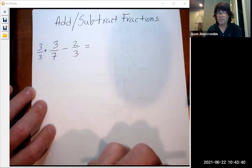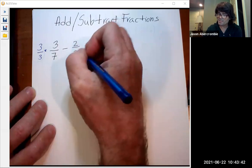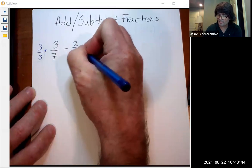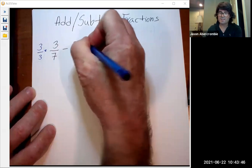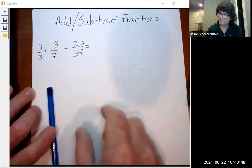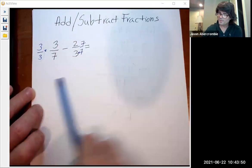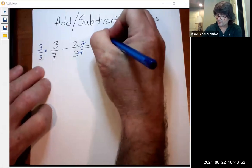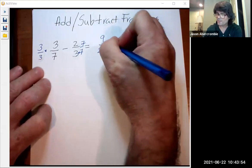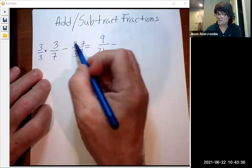It's one in a form that's convenient. To get this to be a 21, we need to multiply that by seven on top and bottom. So we're going to end up with first nine over 21.